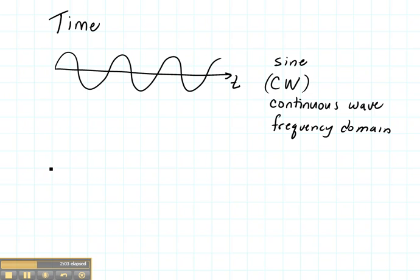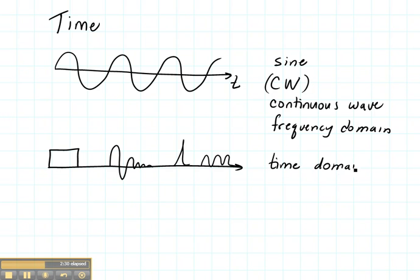Now a second type of wave would be something that changes substantially with time. Something like a step function from turning a source on or off. Something like a pulse. Perhaps like this. Maybe another kind of pulse, a spike. Another thing that you might see is a sine wave that then stops. All of these would be called time domain waves because there's going to be a substantial variation with time.